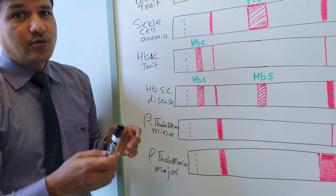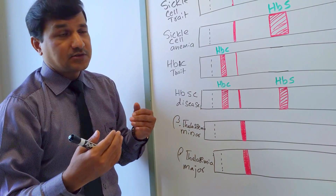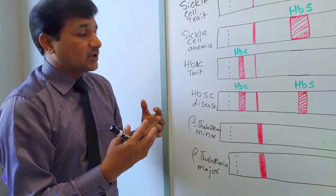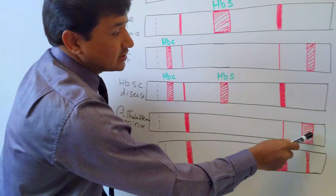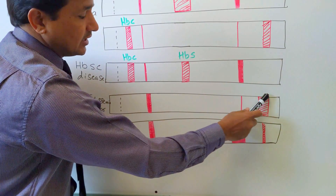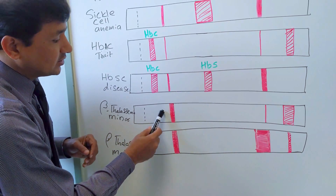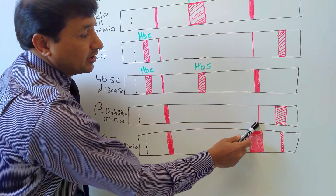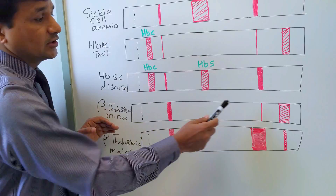In beta thalassemia minor, it is a heterozygous condition where one beta globin gene is mutated, causing decreased beta globin synthesis quantitatively. Adult hemoglobin is synthesized but is quantitatively less. As a compensation, minor adult hemoglobin HbA2 is increased. There is not much increase in fetal hemoglobin, but HbA2 is increased in beta thalassemia minor.